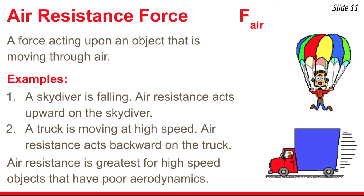Air resistance is another contact force that results from objects that move through air. As an object moves through air, it collides with air particles, and the cumulative effect of all these collisions results in a force we call air resistance, represented by the symbol F-air. A skydiver falling is one example — air resistance acts upward upon the skydiver. Even a truck moving at high speed down a roadway experiences a backward air resistance force. Air resistance tends to be greatest for high-speed objects with very poor aerodynamics.